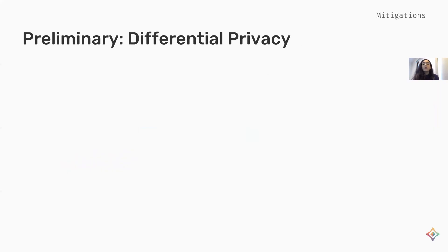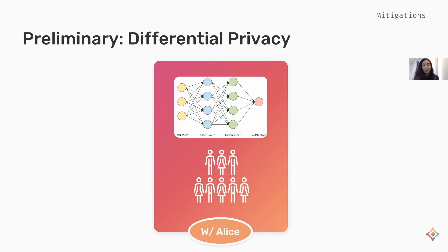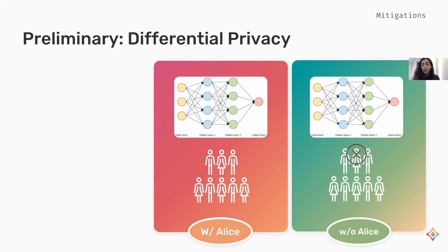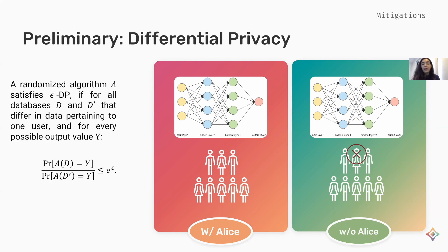Now that we have seen some of the existing threats, we will briefly discuss the existing mitigations. I will first brush up on the notions of differential privacy and geoindistinguishability. Let's assume we train a model using a medical dataset that includes Alice's medical records, and then train another model without Alice's data. If we want to achieve differential privacy, we should guarantee that the outputs of these two models for any possible set of inputs are very similar. More concretely, a randomized algorithm A satisfies epsilon differential privacy if, for all neighboring datasets D and D', and all possible outputs, the ratio of the probability of seeing output Y is bounded by e to the power of epsilon.